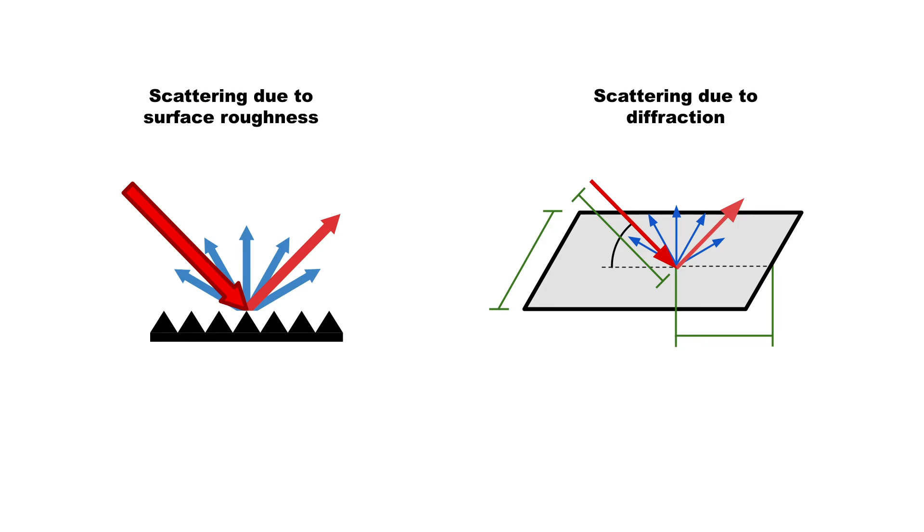In conclusion, you as a user only need to worry about the material scattering coefficient, that is, the scattering due to surface roughness. And ODEON will automatically add scattering due to diffraction. That concludes this video, and we hope you have found it useful.